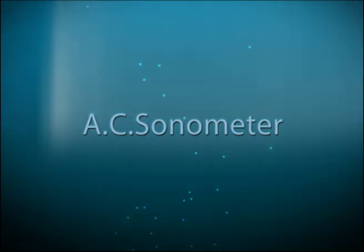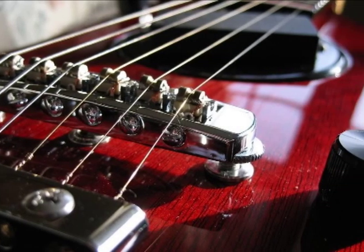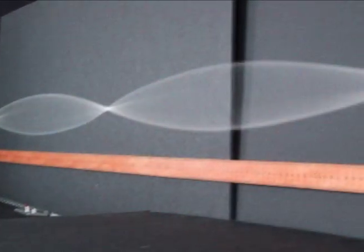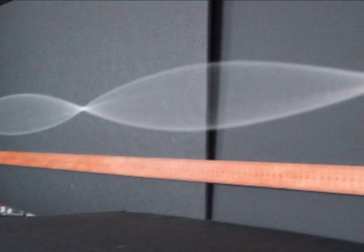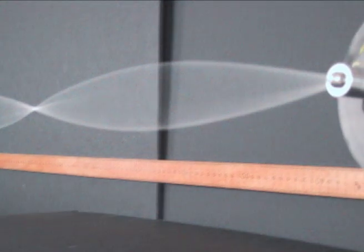AC sonometer. Every object has a natural frequency of vibration. If kinetic energy is applied to an object at a rate that matches its natural frequency, resonance occurs and the object vibrates.